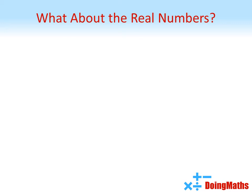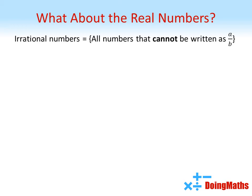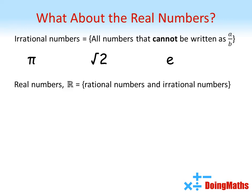And what about the real numbers? We have irrational numbers, which are all the numbers that cannot be written as a fraction with whole numbers, so for example pi, root 2, or e. The real numbers is the set of all the rational numbers and irrational numbers put together.